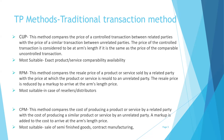The third method is the cost plus method. This method compares the cost of producing a product or service by a related party with the cost of producing a similar product or service by an unrelated party. A markup is added to the cost to arrive at the arm's length price. The cost plus method is most suitable in the case of sale of semi-finished goods and contract manufacturing companies.